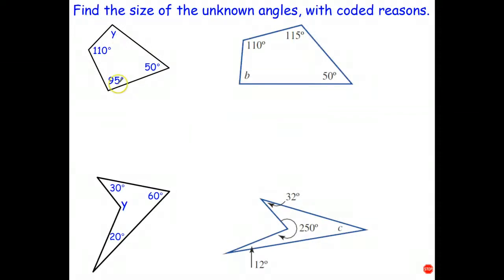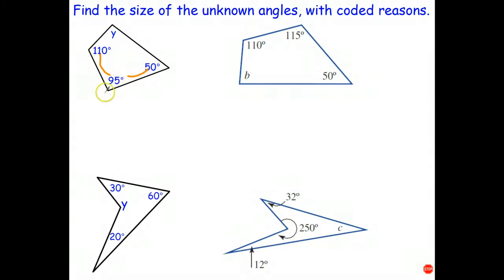Here we have a quadrilateral, so I know that these four angles all add to 360. Let's add the ones we already know and then subtract from 360. So 110 plus 50 is 160. If I add another 100 to that, it gives me 260. Then take away 5, so that gives me 255 as the total for those three known angles.